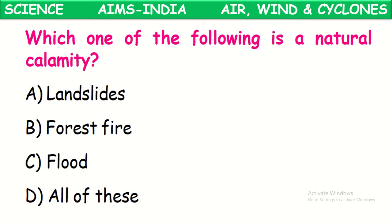Which of the following is a natural calamity? Landslides, forest fires, and floods all come under natural calamities. There is no influence of human beings on these — they occur naturally. So all of these are natural calamities.